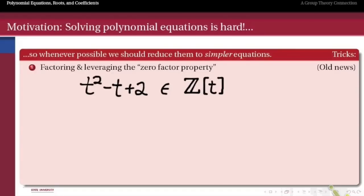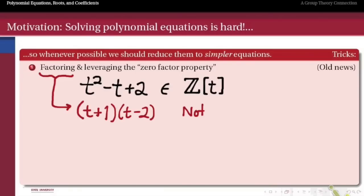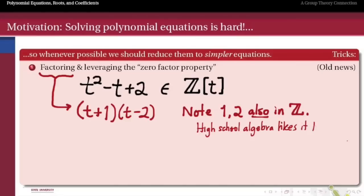Consider t² − t − 2, a polynomial over the integers. I can factor this as (t + 1)(t − 2). Note that the 1 and negative 2 in these factors are also integers, which is great. In high school algebra, if you can't factor a polynomial and find the two integers that work, you generally just say you can't factor it.